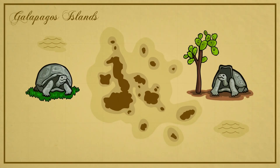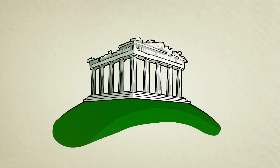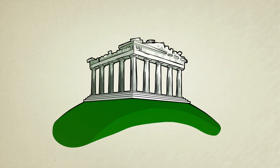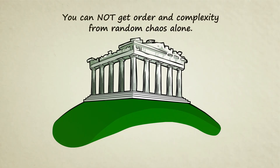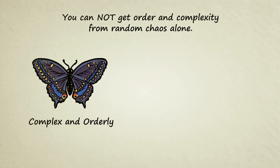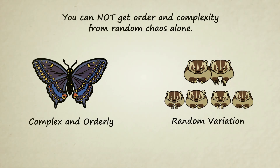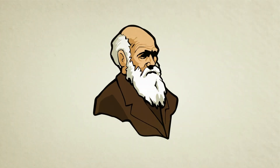Because the evidence for common descent is so overwhelming, the concept has been around since ancient times. In the past, however, it was rejected by many philosophers and scientists for one main reason: you cannot get order and complexity from random chaos alone. The bodies and behaviors of living things are extremely complex and orderly. Descent with modification simply produces random variation. No one could explain how complex life arose from simple life through random variation — until Charles Darwin discovered natural selection.